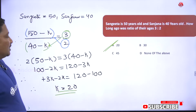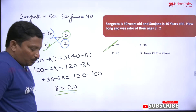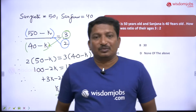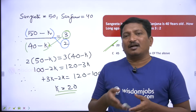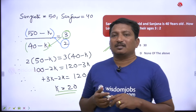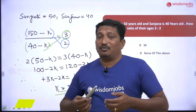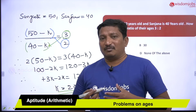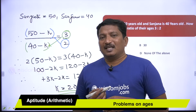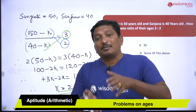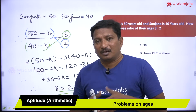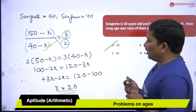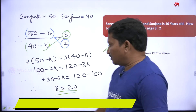However, this conventional approach is not the best for exam conditions. A better approach is to use the options directly. Check the options — option A, option B, option C, option D — and substitute those values to verify which one satisfies the ratio.